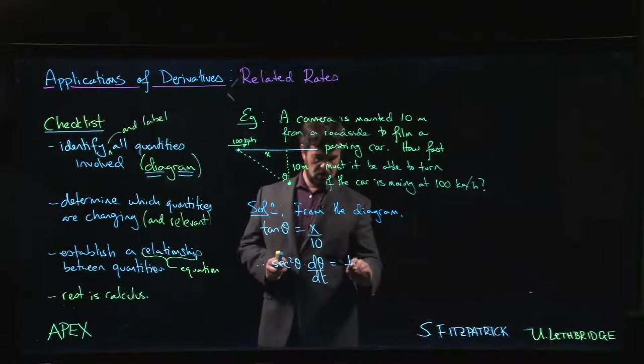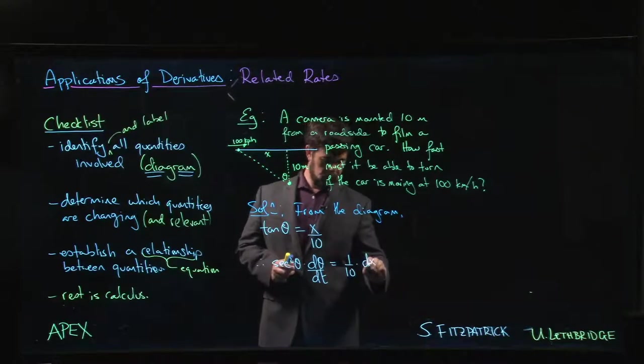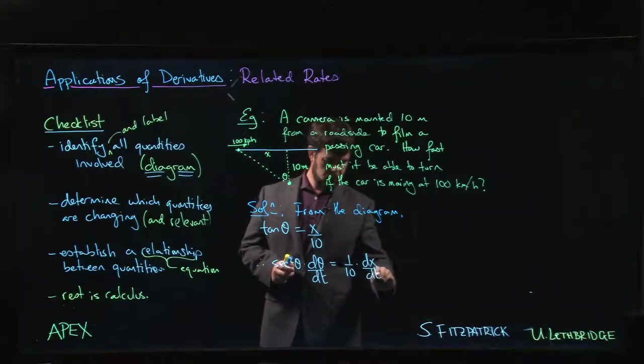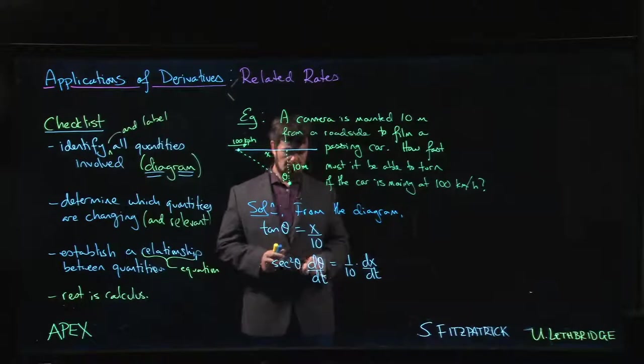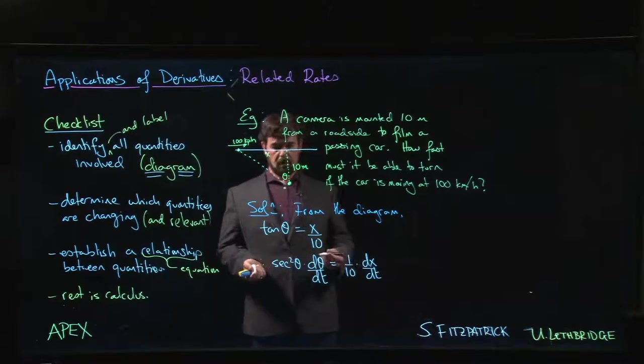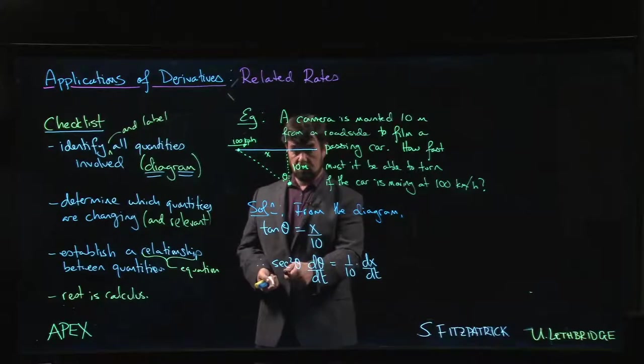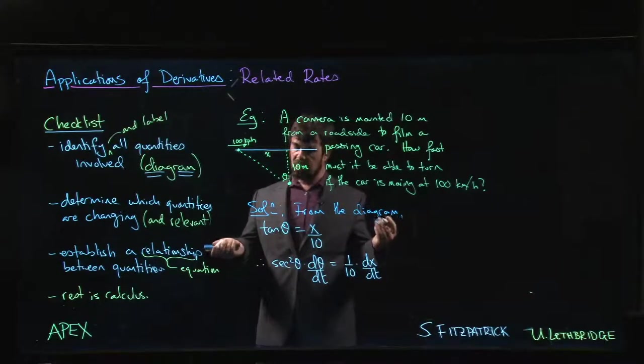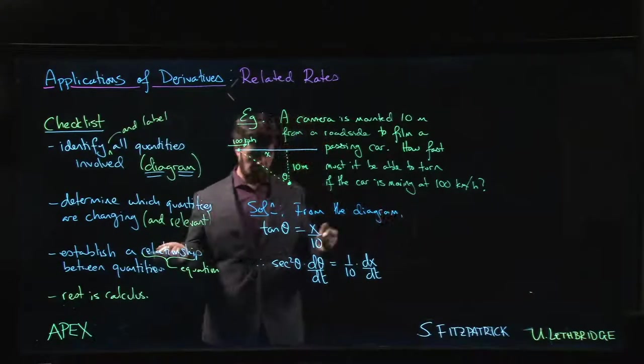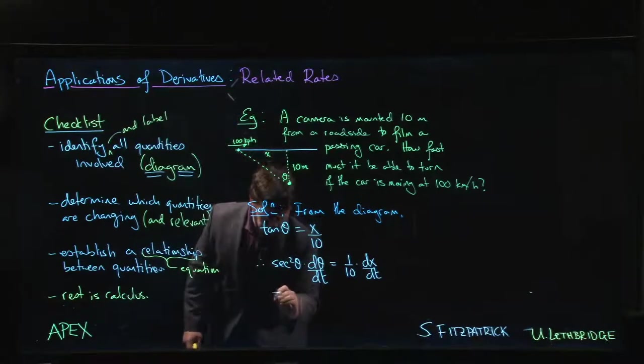Secant squared θ times dθ/dt is equal to 1 over 10 times dx/dt. We want to solve for dθ/dt, so we need to divide both sides by secant squared, which is the same as multiplying both sides by cos squared.